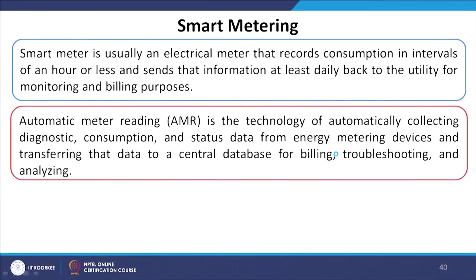Automatic Meter Reading, commonly known as AMR, is the technology of automatically collecting consumption and status data from energy meters and transferring that data to a central database for billing, troubleshooting, and analyzing. Smart meters play an important role in sending all information about the grid to the utility so that troubleshooting and analysis can be performed for a given time.